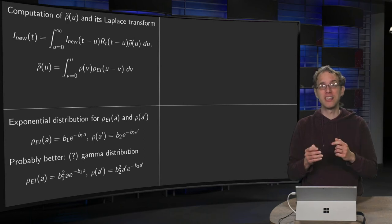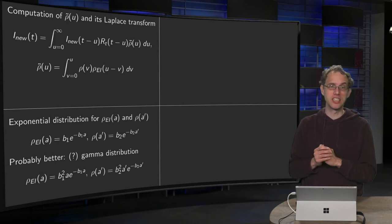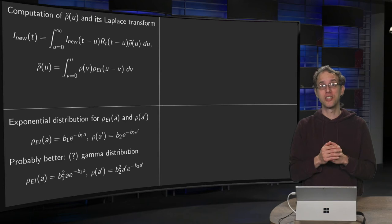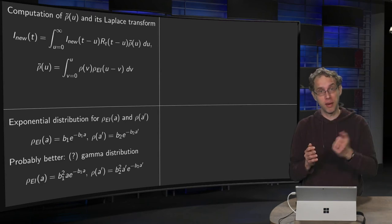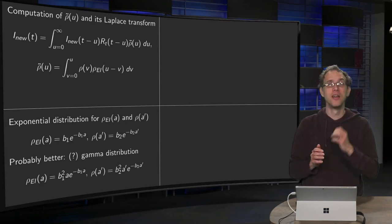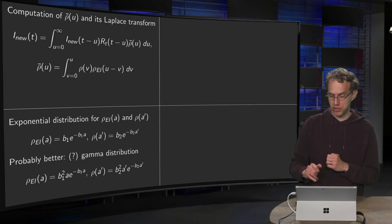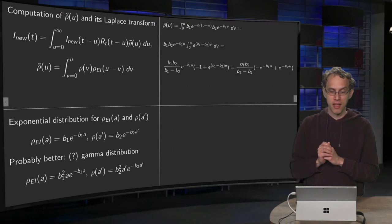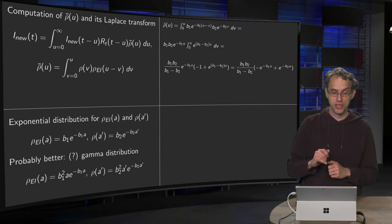But keep this in mind, actually it might be necessary, if you really want to apply this, to generalize this a bit, and to use the gamma distribution instead. For now we will use the exponential distribution, then computation of the convolution is easier.